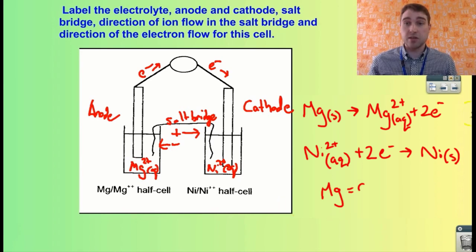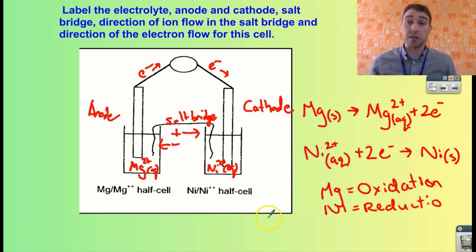Now we need to identify which one is oxidation. In this case the magnesium, oxidation is loss, so that's oxidation. And the nickel ions are being reduced.